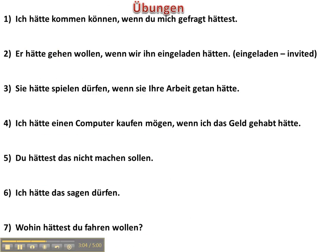Now we're going to try some exercises — Übungen — going from German to English, using modal verbs in the subjunctive mood. Nummer eins: 'Ich hätte kommen können, wenn du mich gefragt hättest' means 'I would have been able to come, if you would have asked me.'